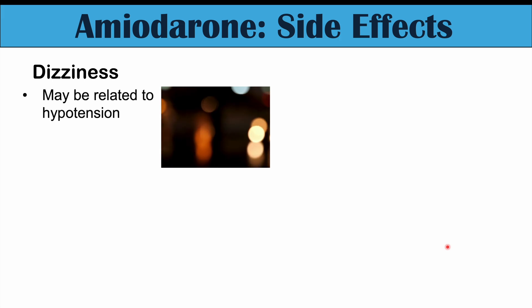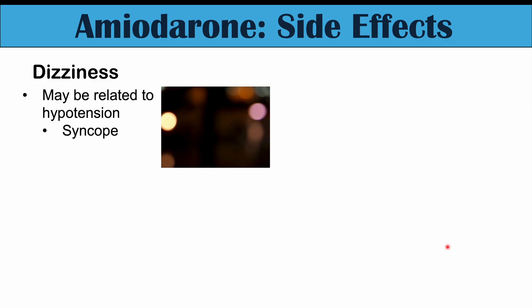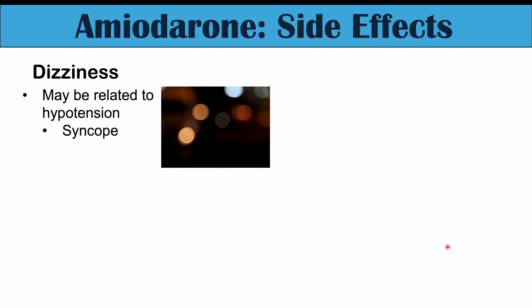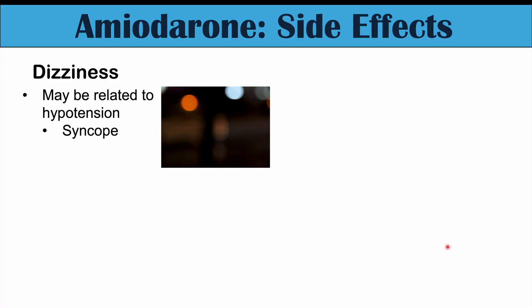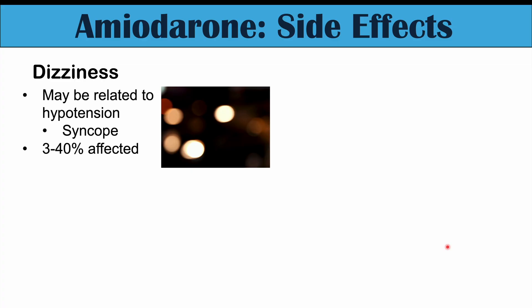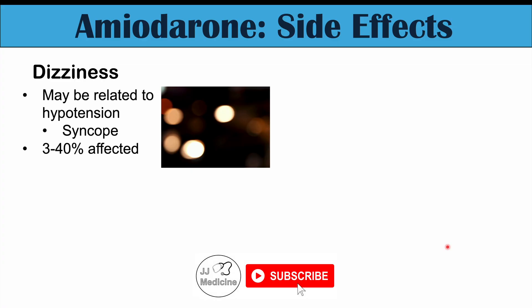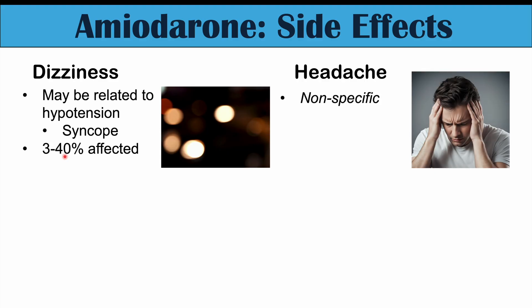Dizziness may be related to hypotension — that low blood pressure. In that case, it could be syncope, a light-headedness, and in some cases if severe enough, patients could faint. This can occur in a large variable percentage, anywhere from 3% up to 40% of patients depending on the study. Headaches can also occur — typically a nonspecific tension-like headache with a vice-like band around the head, bilateral on both sides. Again, 3% to 40% of patients may be affected.